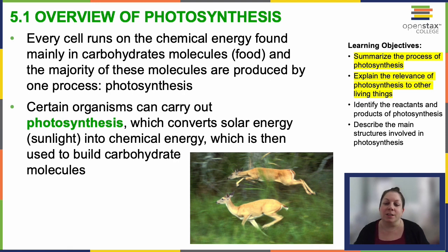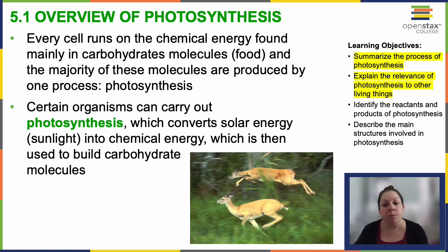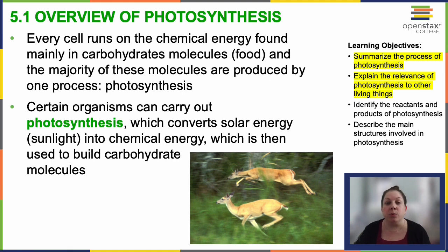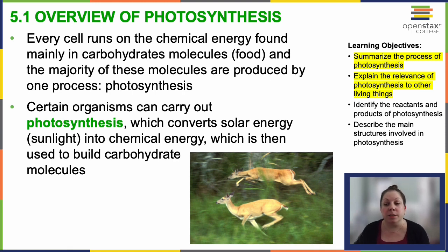During photosynthesis, specific organisms are able to transform solar energy — sunlight — into chemical energy. And they can construct a carbohydrate molecule in the process. When organisms break down food, they're releasing that potential energy stored in those chemical bonds, which is then utilized by the cell to perform various tasks, including cellular respiration.